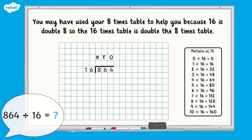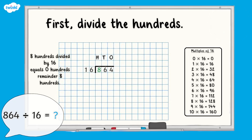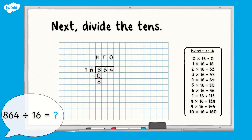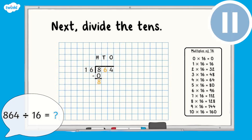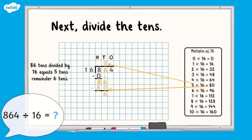Did you get the multiples of 16 up to 10 times 16? Here they are. You may have used your 8 times table to help you, because 16 is double 8, so the 16 times table is double the 8 times table. First, divide the hundreds. 8 hundreds divided by 16 equals 0 hundreds remainder 8 hundreds. Did you write all the digits in the correct place? Next, divide the tens. Don't forget to include the tens from the dividend. 86 tens divided by 16 equals 5 tens remainder 6 tens.